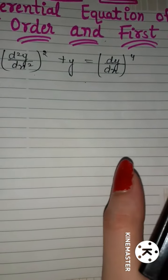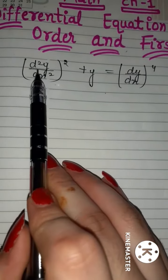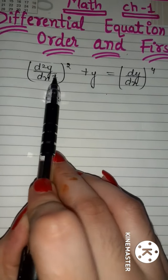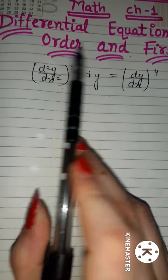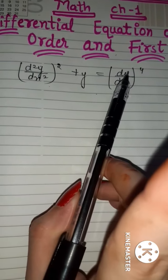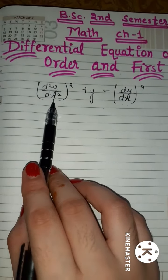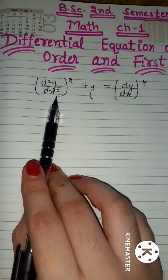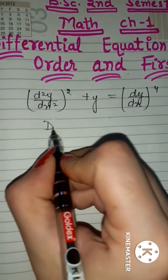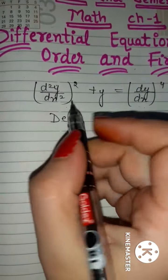Order of highest derivative within the equation: इस equation में highest derivative क्या है? d²y/dx² — यानी यहाँ पर दो बार differentiation हुई है। यहाँ dy/dx है, यानी एक बार differentiation हुई है। तो highest derivative है d²y/dx², तो इसका order 2 होगा। Sorry — order 2 होगा।